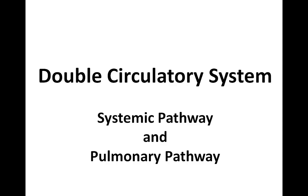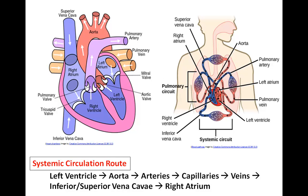Let's take a look at the double circulatory system in a human. It is made up of both the systemic pathway, which transports blood from the heart to all body areas and then back to the heart, and the pulmonary pathway, which transports blood to the lungs and then back to the heart. We will begin with the systemic circulation route. The route begins at the left ventricle where oxygenated blood is pumped into the aorta, which branches into smaller arteries transporting blood to areas above the heart such as the arms and head, and to areas below such as the trunk and legs.